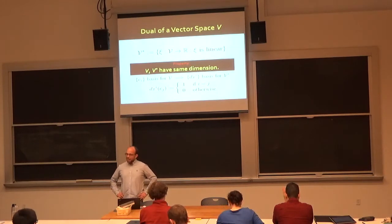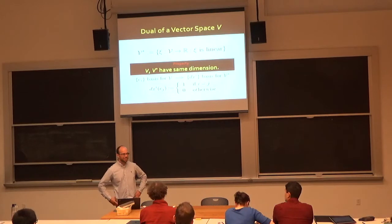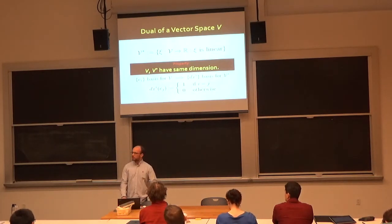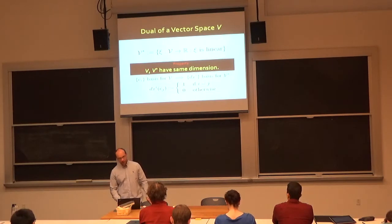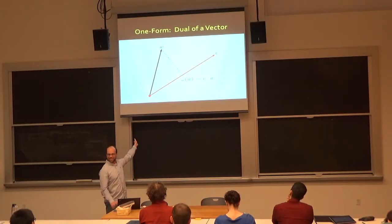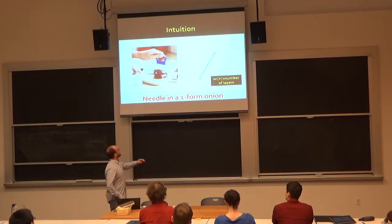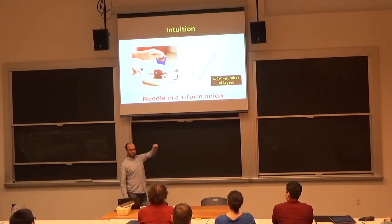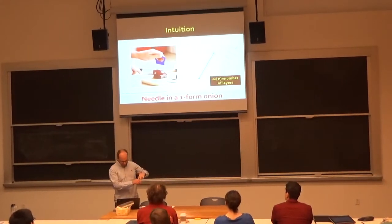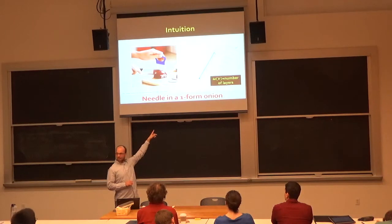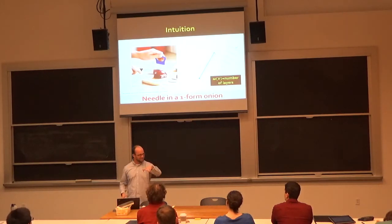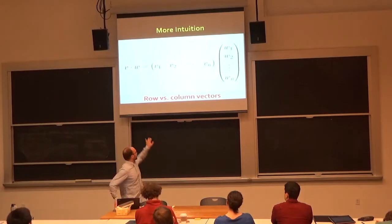Last time we embarked on developing the dual theory to vector fields, where every vector field has a corresponding field of one-forms — things that take dot products with vectors. A one-form is the dual of a vector. The intuition is like measuring layers of an onion: you think of the one-form as the onion, and the inputs as something you stick into it, and the onion tells you how many layers you passed through. Alternatively, a one-form is like a row vector to a column vector.